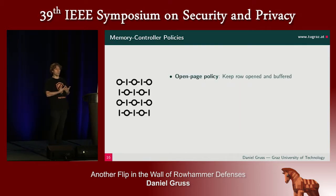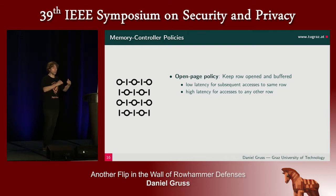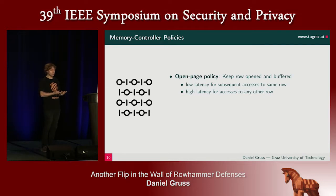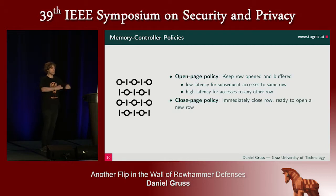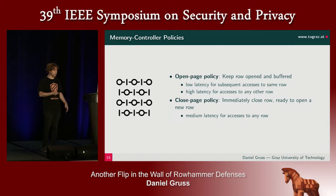Why does this work? Because in some systems the open page policy is used — the idea there is that you keep the row open and buffered, giving you low latency for subsequent accesses to the same row but high latency for accesses to any other row. More efficient if you expect the next access to go to a different row is the closed page policy, where you immediately close a row and are ready to open a new row, giving a medium latency for accesses to any row including the one just opened. It's a trade-off.